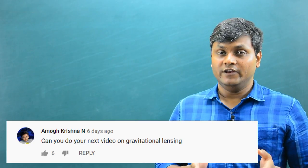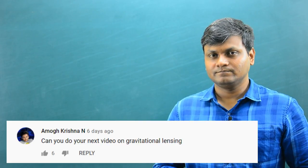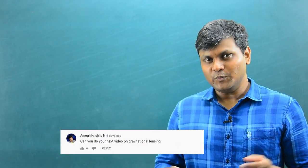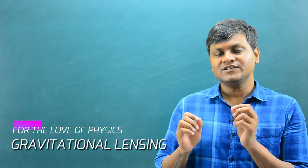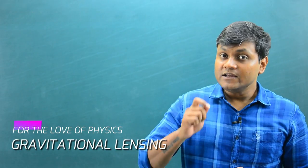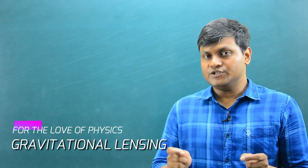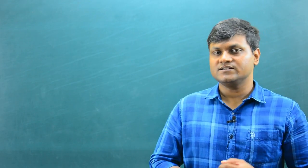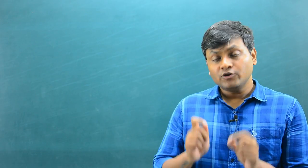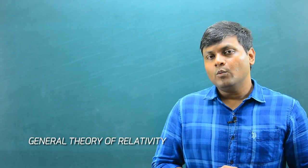Gravitational lensing is a phenomenon that has to do with the bending of light in the presence of heavy objects like stars, galaxies, and galactic clusters, and it is accurately described by the general theory of relativity.